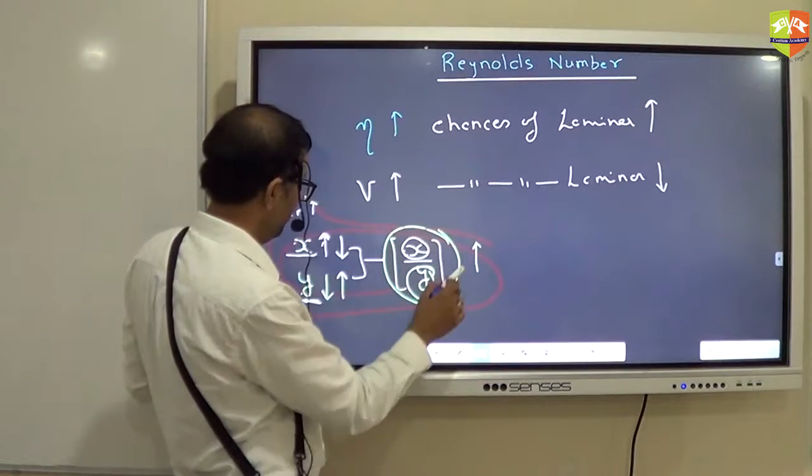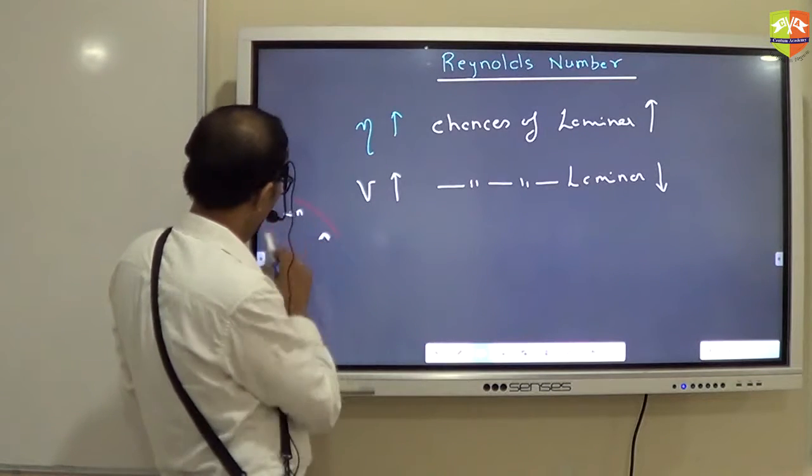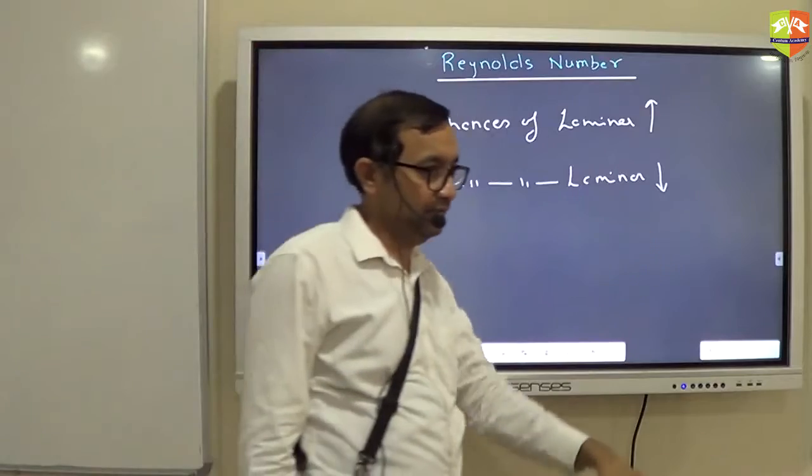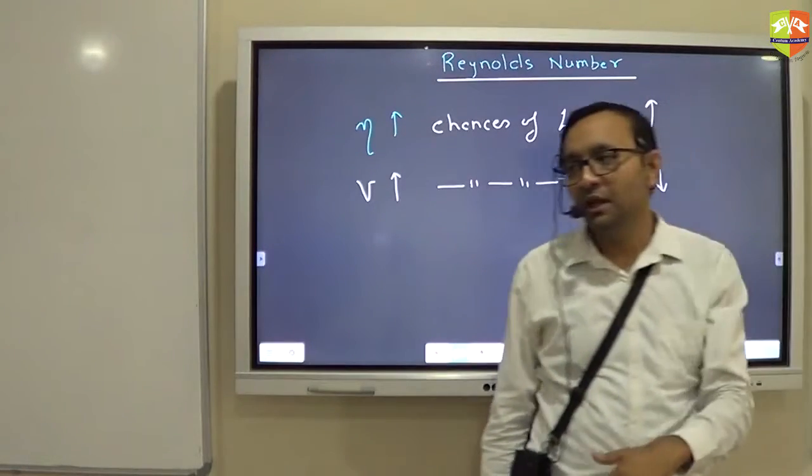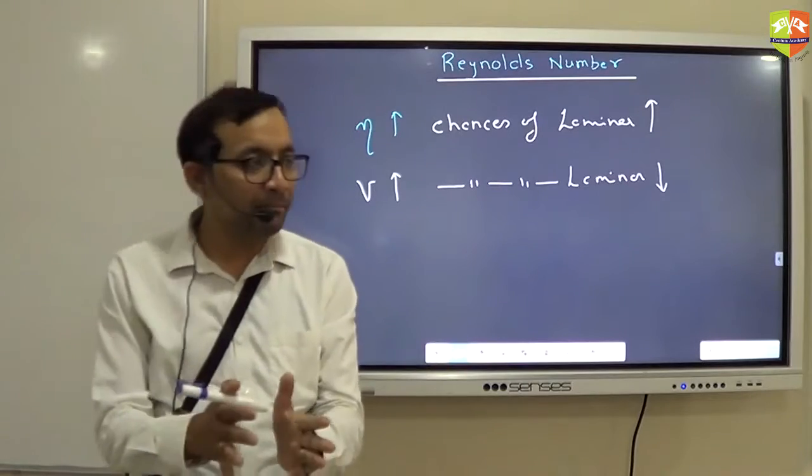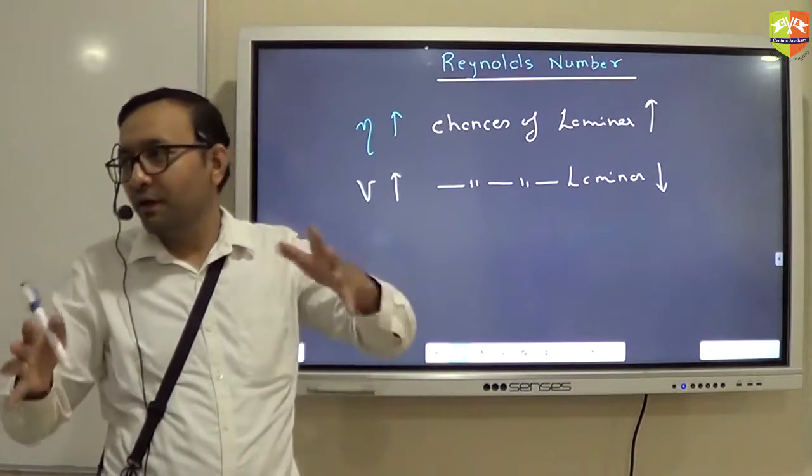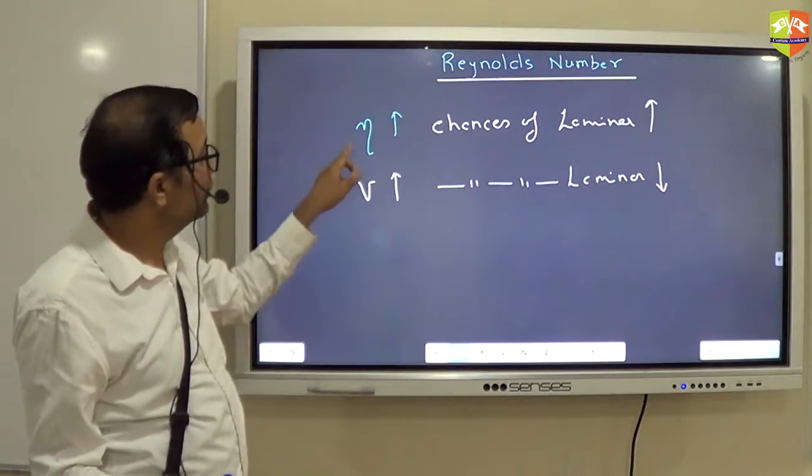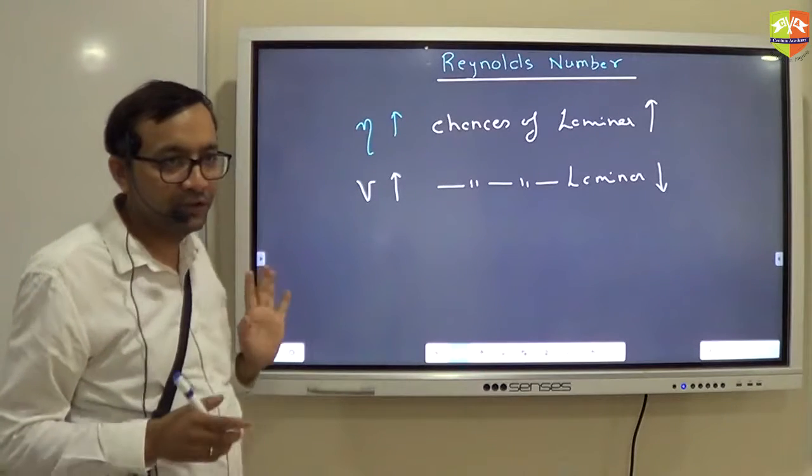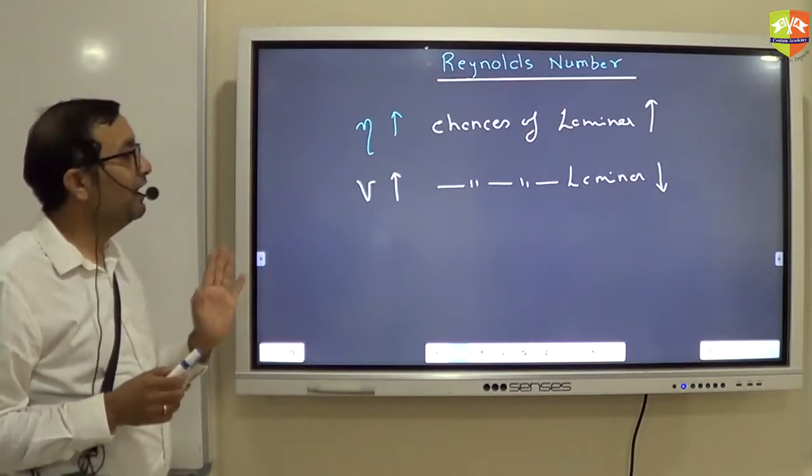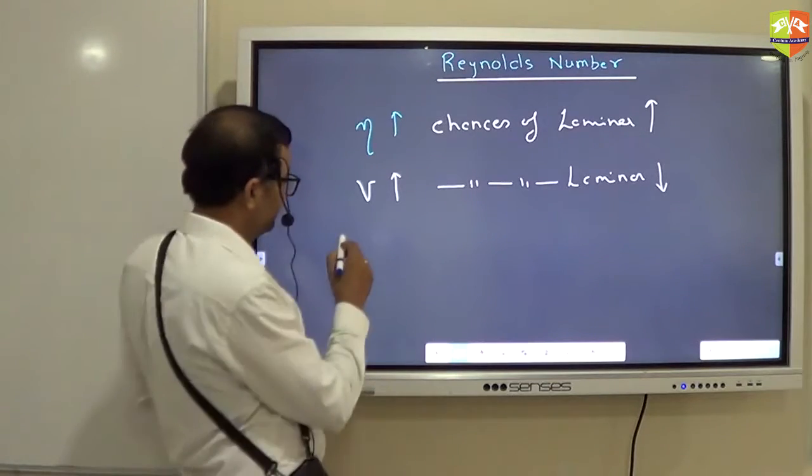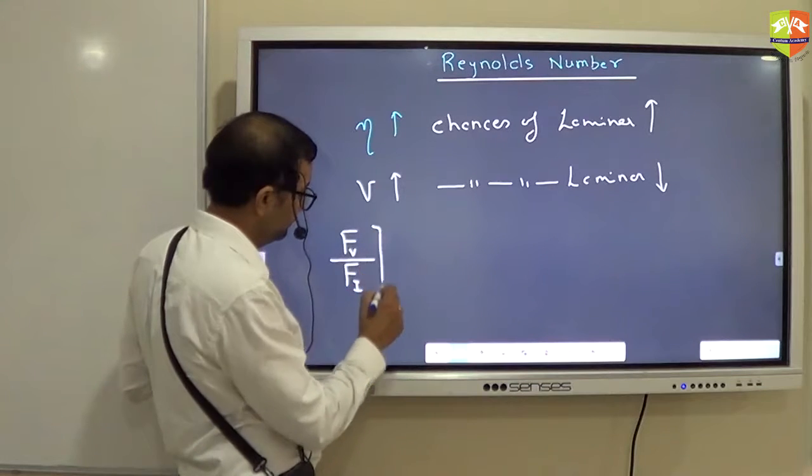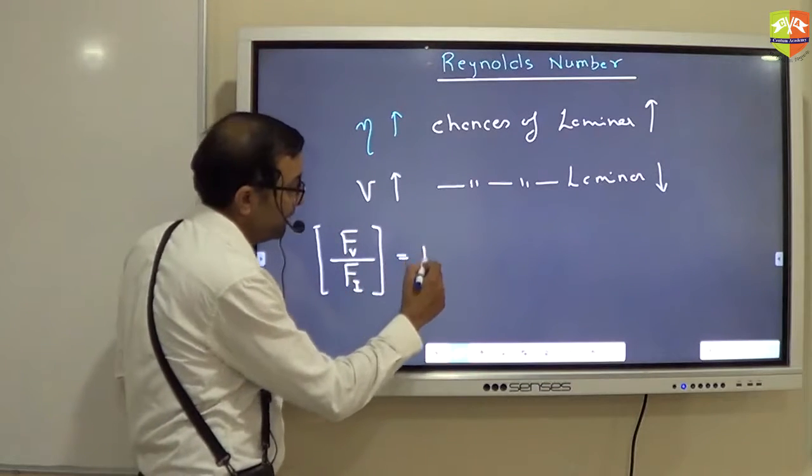One more thing is very important here. I want to define a number which is dimensionless. If it has dimension then the geometry will also start mattering—whether the pipe is thinner, bigger, or whatever it is. So I need to define a quantity which is dimensionless and I should take into account both viscosity as well as velocity. So I will take a ratio between viscous force and the inertial force.